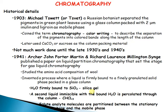Historical details: Mikhail Tsvet, a Russian scientist, separated pigments in green plant leaves using a glass column packed with calcium carbonate and inulin, using light petroleum as the mobile phase. He coined the term chromatography — 'chroma' means color — to describe the separation of pigments into colored bands along the length of the column.